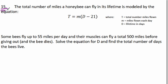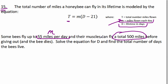And lastly, number 15. We have done 15 problems today. That's amazing. Fantastic. Total number of miles a honeybee can fly in its lifetime is modeled by the equation. Total number of miles equals the miles flown each day. That's what M is. Times a quantity. The number of lifetime. D equals the lifetime of the bee in days. It's how many days the bee lives. And then you subtract 21. And you get this nice little model here. Some bees fly up to 55 miles in one day. That's a lot. That's how many miles per day. So, which one is that? Miles flown each day. That's the little M. So, little M. And their muscles can fly a total of 500 miles before giving out and they die. So, that's T.